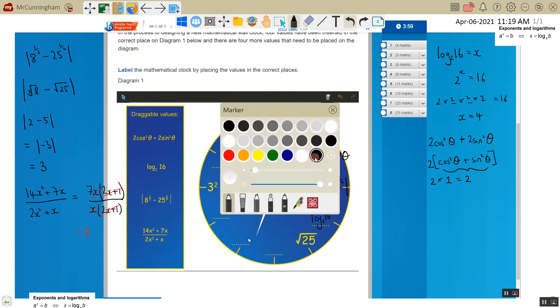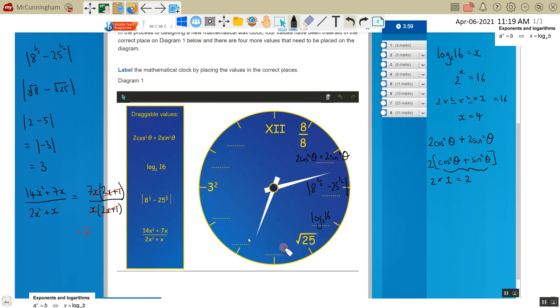So I can write, so there's 6, this is 7, this is 14x squared plus 7x over 2x squared plus x. So that's question 1. If you've got any questions on that, just let me know.